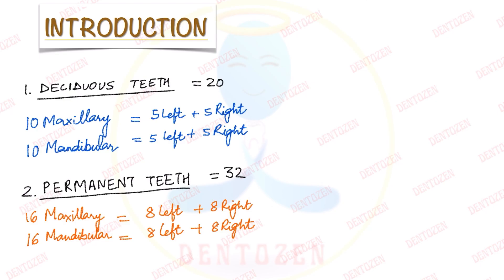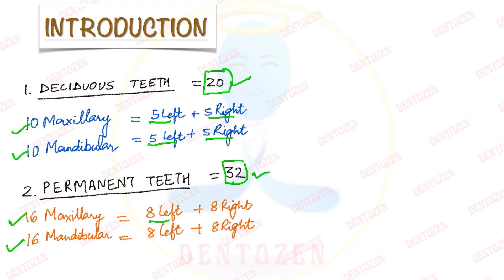We have two types of teeth in the mouth. The first to form are deciduous teeth, which are later replaced by permanent teeth. There are 20 deciduous teeth — 10 maxillary and 10 mandibular, 5 on each side of each jaw. Then when we talk about permanent teeth, there are 32 — 16 in the maxilla and 16 in the mandible, 8 on each side of the jaw.